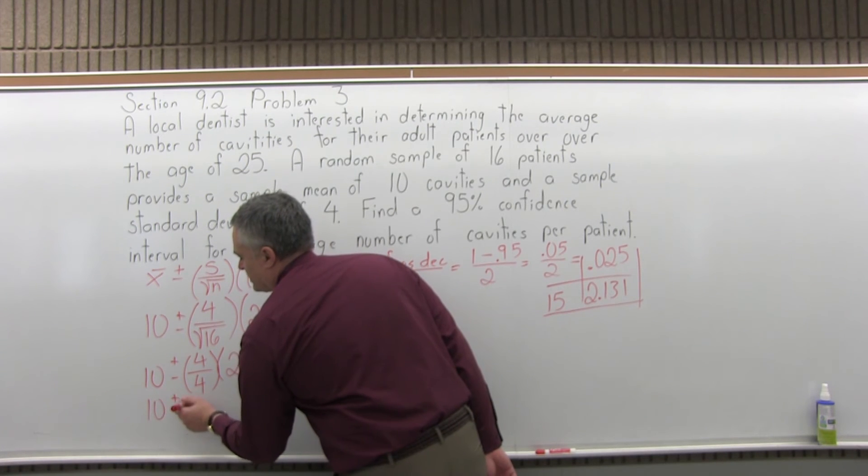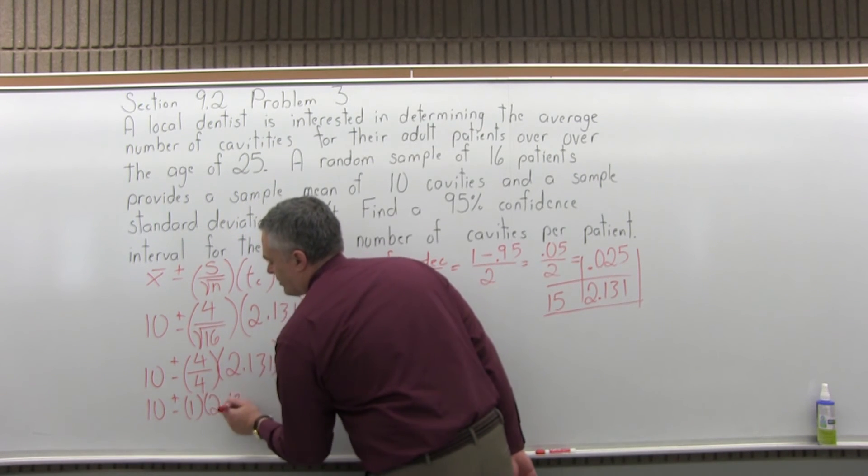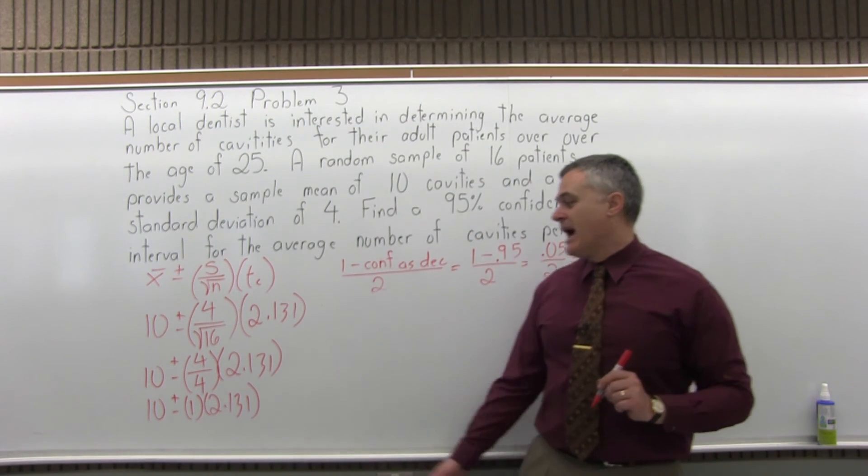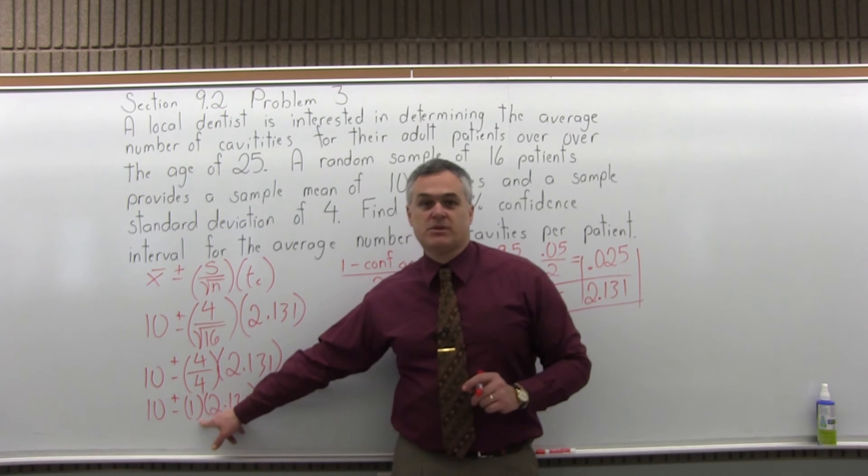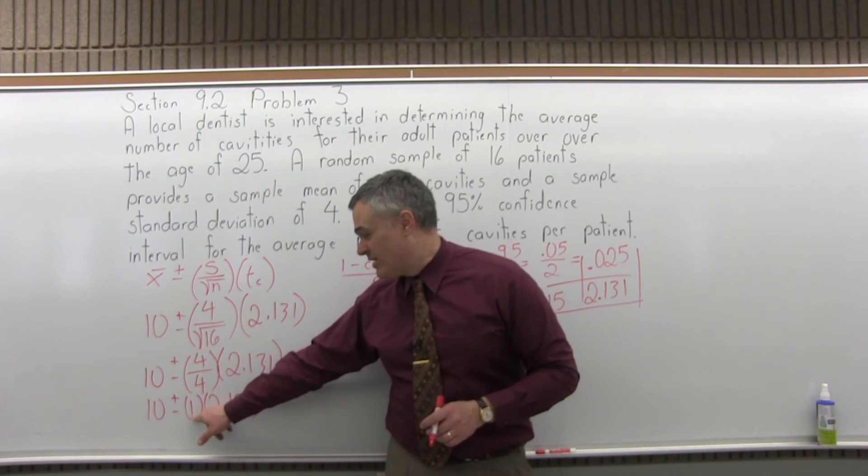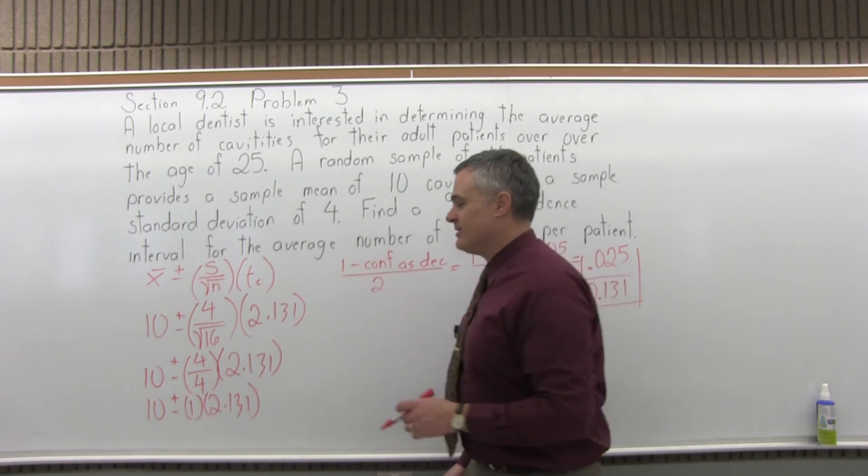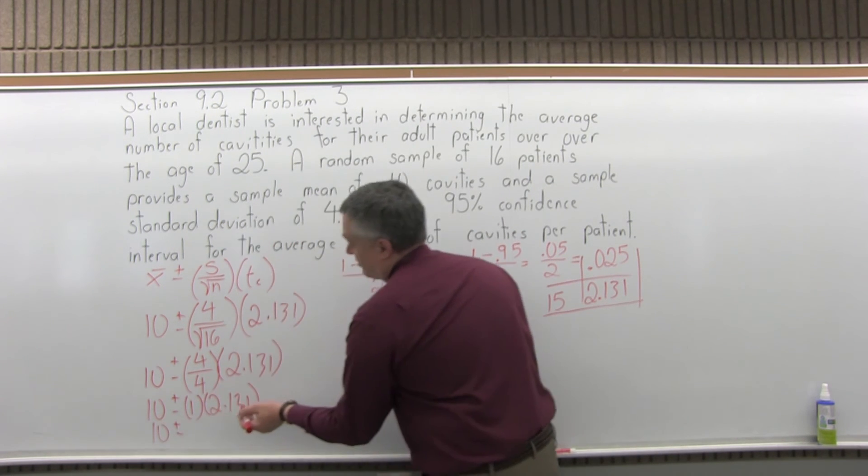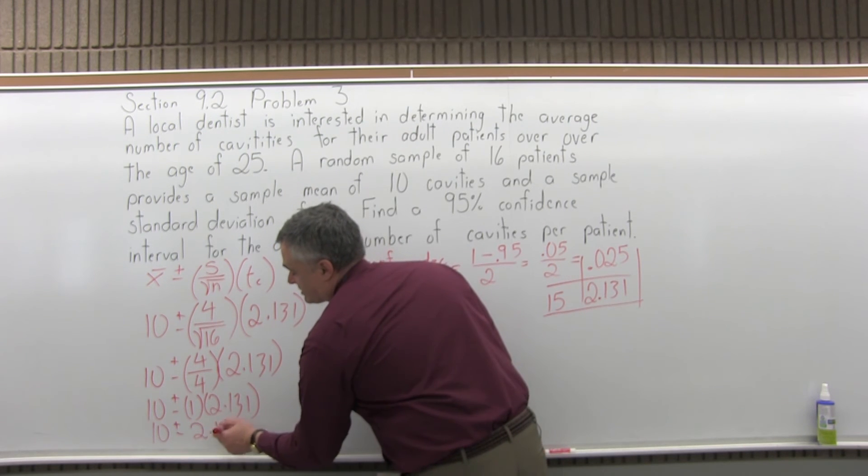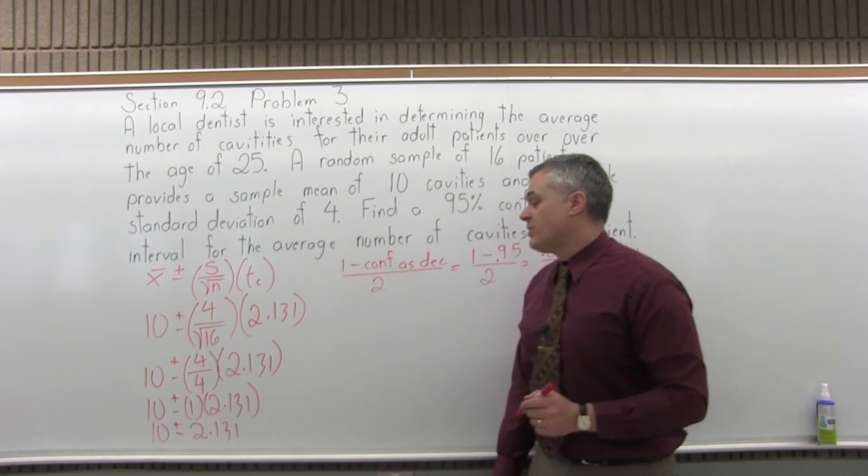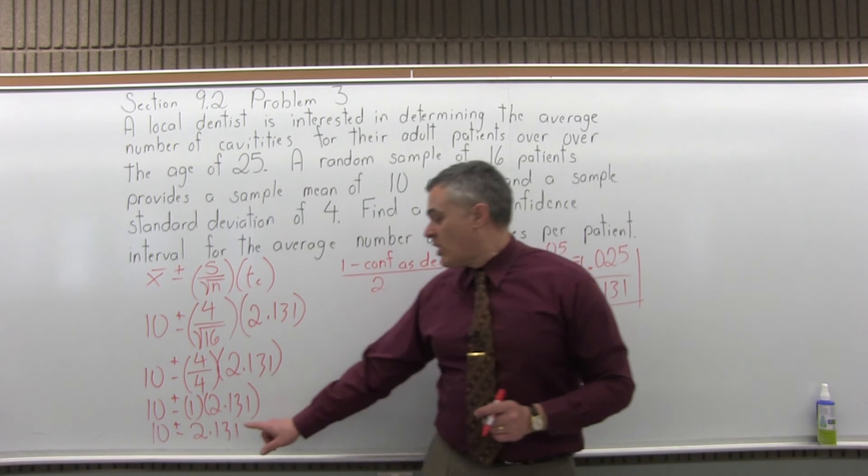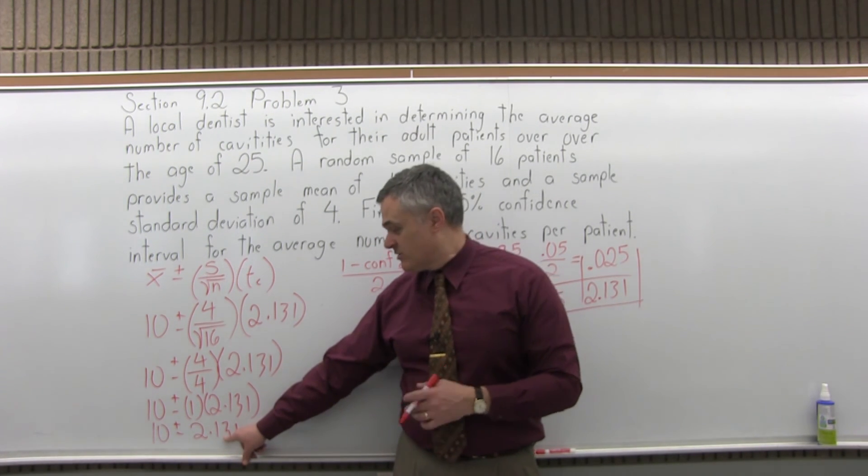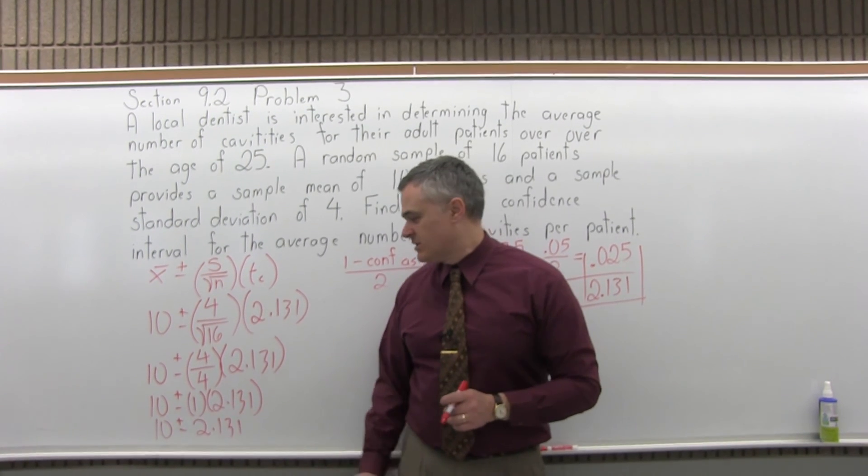10 plus or minus 1 times 2.131. And now ordinarily there's a multiplication that would occur here that I would need a calculator for. But 1 times 2.131 I can do in my head. The calculator would just say 2.131, because times 1 it wouldn't change it. So I have 10 plus or minus 2.131. So now that I have one number value after my plus and minus symbol, this will be called the margin of error. Down to that point where you have one number after the plus and minus.